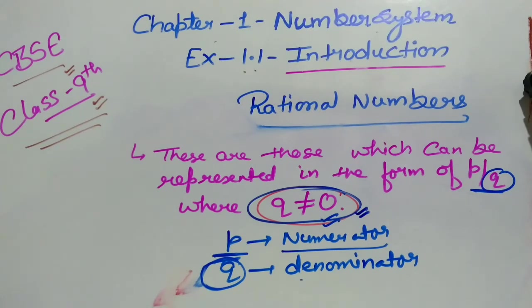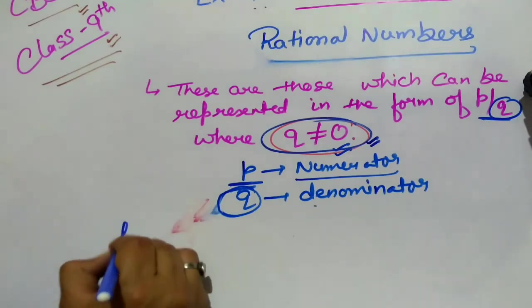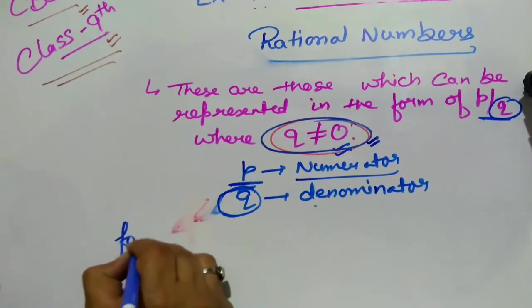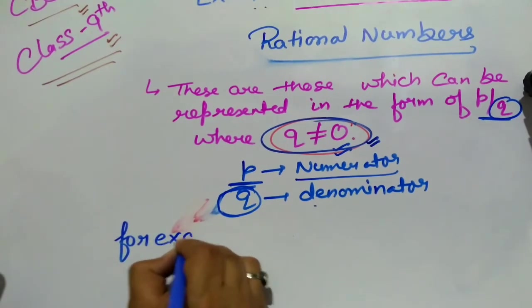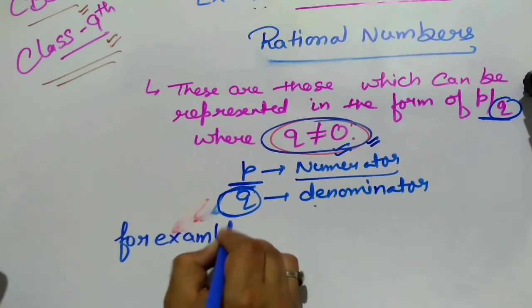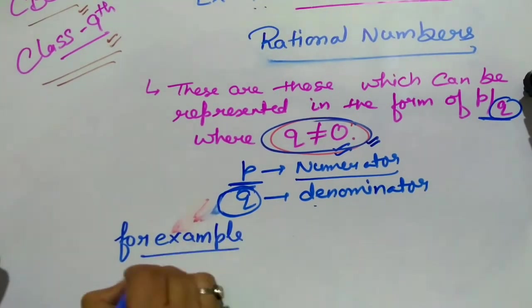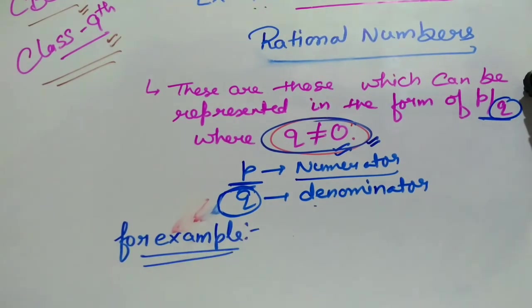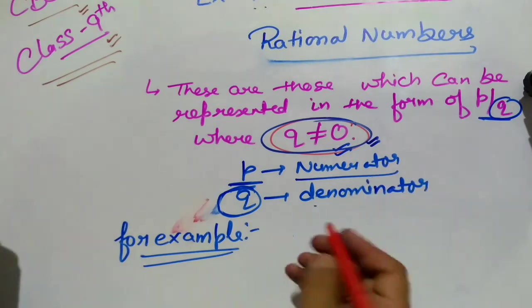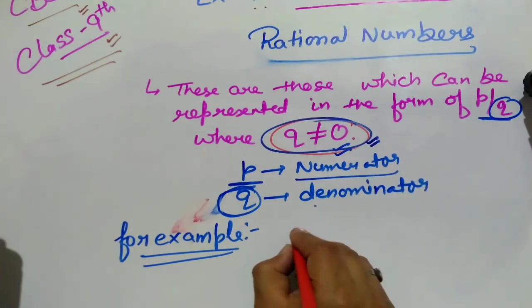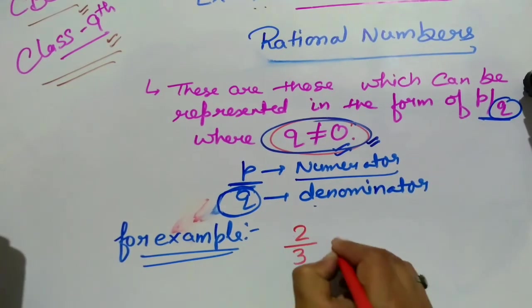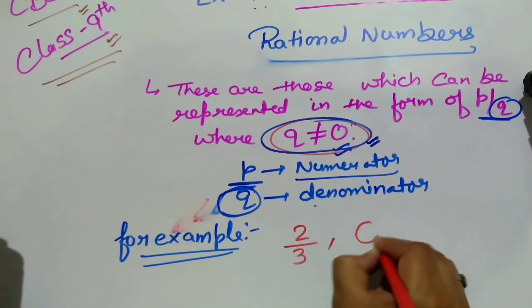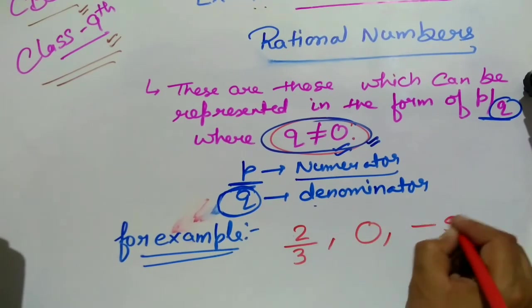If you have rational numbers, let me give you some examples. For example, consider 0, minus 5, and 2/5.